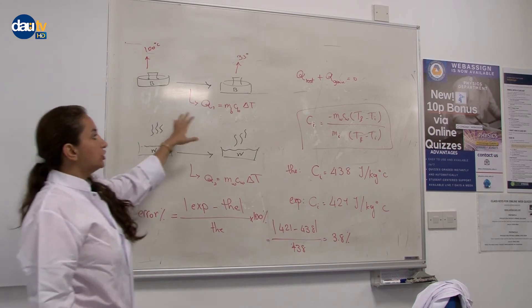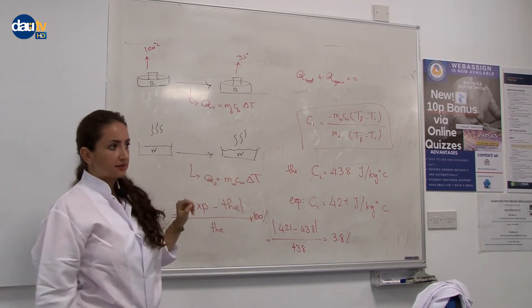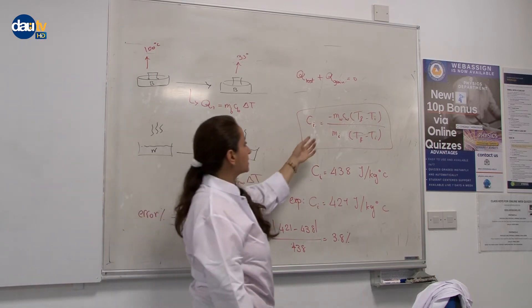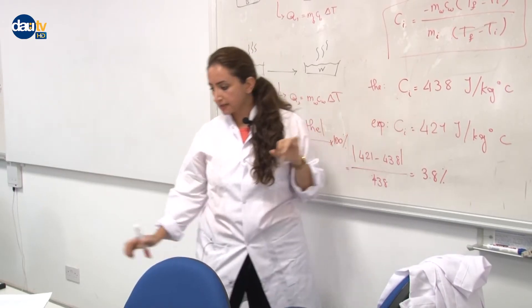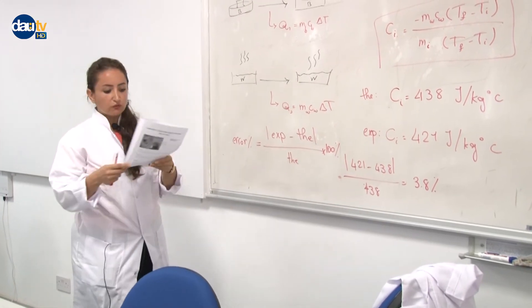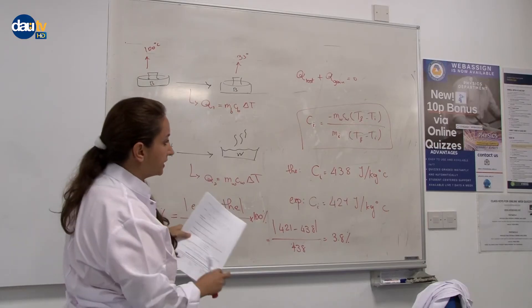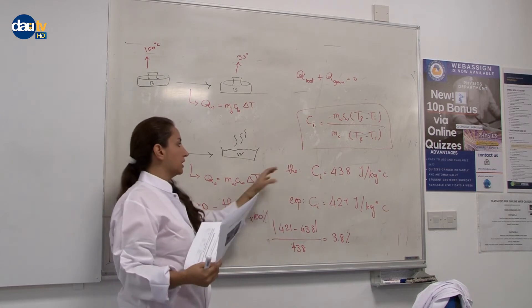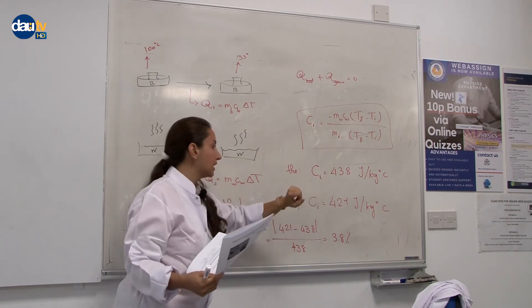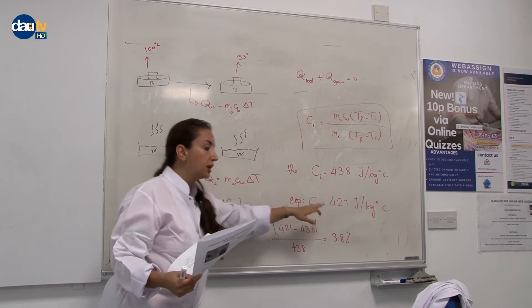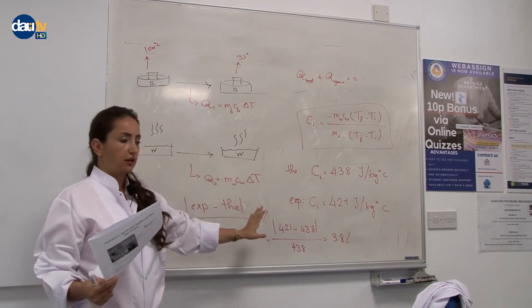We must do exactly the same process for brass. The specific heat of brass, according to the value given in the manual, is 380 J/(kg·K). Write 380 as the theoretical value, define your experimental value, and perform the percentage error calculation again.